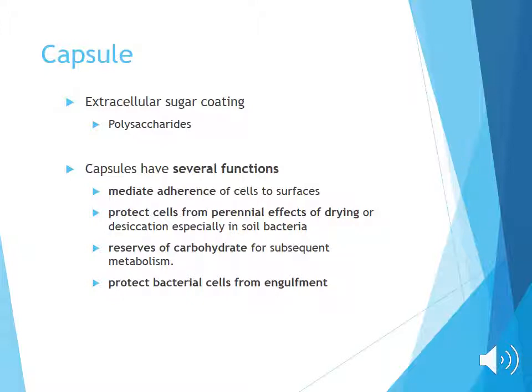In our first unit we talked about phagocytosis — white blood cells that engulf foreign material like bacteria. To initiate phagocytosis, there must be direct contact between receptors on the phagocyte and ligands or pattern repeats on the bacteria. That direct contact initiates the engulfing process. The capsule disrupts this by preventing that direct contact from occurring.